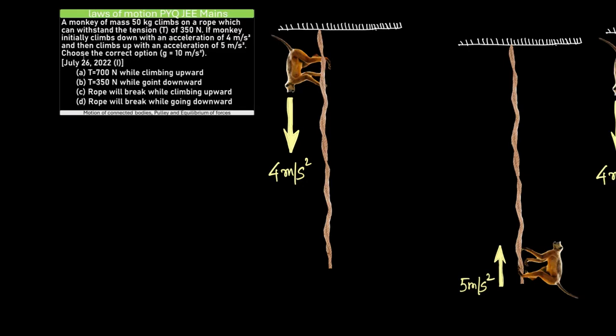In this case we have a monkey climbing down and climbing up the same rope at two different accelerations of 4 m/s² and 5 m/s² respectively. We've been given the maximum tolerable tension as 350 Newton, and we've been asked to find out whether the action of the monkey going down with 4 and going up with 5 would be within the tolerable limit or not.